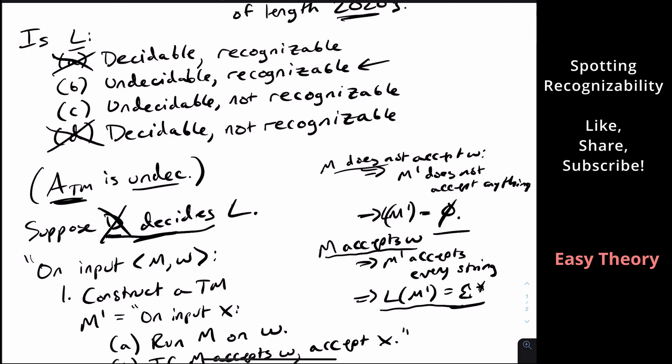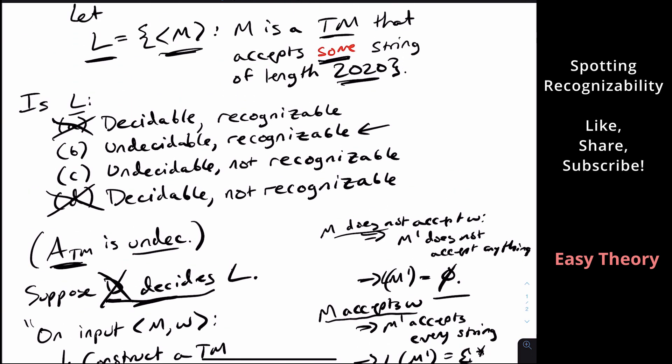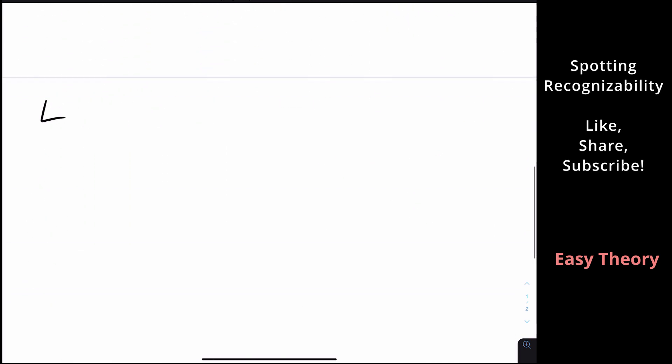But that doesn't tell us anything about whether it's recognizable. So why is it recognizable? So the thing about recognizers is that they have to halt on the strings in their language. That's what they are supposed to do. So when we have a Turing machine that really is in this language L, that really is in there, that means it does accept some string of length 2020. So how can we show that this is recognizable? Well, what we can do is a brute force quote unquote simulation.